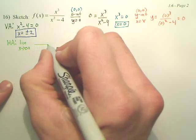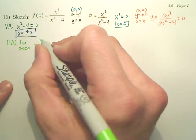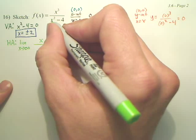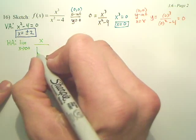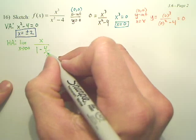you end up with, on top, x cubed divided by x squared is x. On the bottom, x squared divided by x squared is 1 minus 4 over x squared.